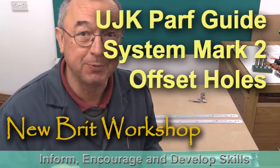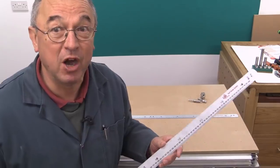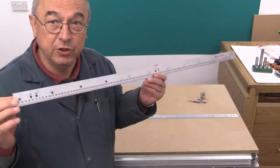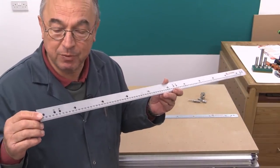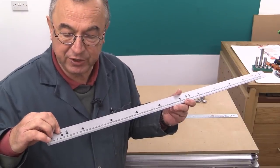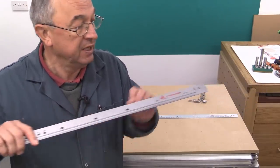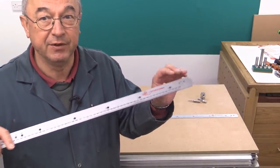In this video, I'm going to show you how to make offset holes with the new Mark II Parfguide system. Now, just to remind you, if you haven't seen the Parfguide system Mark II videos, the new Parfsticks come with some offset holes, and they've got a little label above them. It says either 32 or 48, and there's a pair there, a pair roughly in the middle, and a pair at the other end.